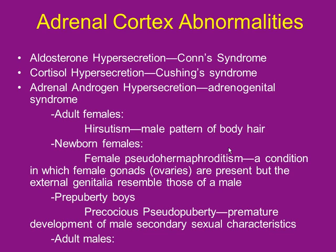Adrenal abnormalities: aldosterone hypersecretion makes you retain way too much sodium. Water follows the sodium, so you swell up — this is Conn's syndrome. Too much sodium also creates imbalances that screw up neuron function. If you're making lots of aldosterone, you're retaining lots of salt — like eating a full bag of pretzels — so you're dehydrated and thirsty constantly.